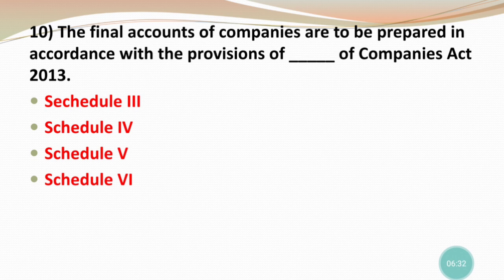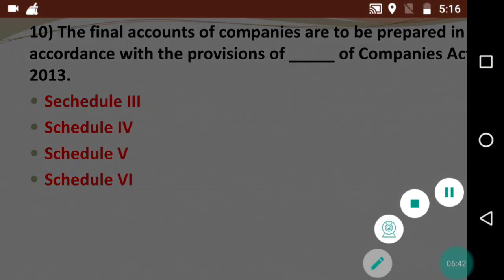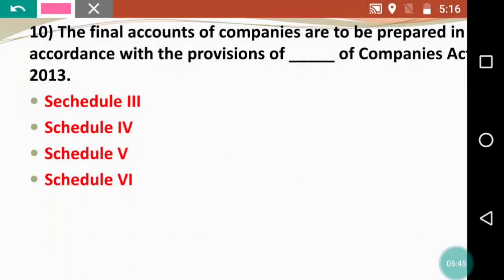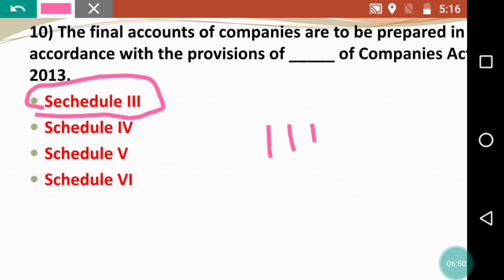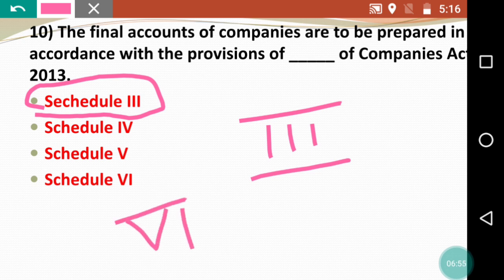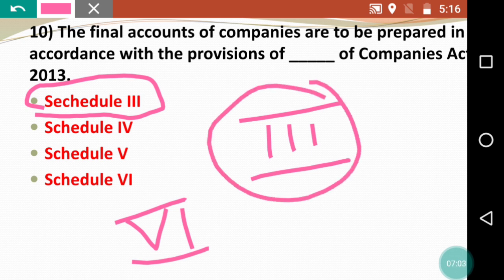Question 10: The final accounts of companies are to be prepared in accordance with the provisions of dash of the Companies Act 2013. Options are Schedule 3, 4, 5, or 6. The correct answer is Schedule 3. Previously before 2013 we used Schedule 6 for preparing the balance sheet, but as per the updated Companies Act 2013, Schedule 3 is now used.